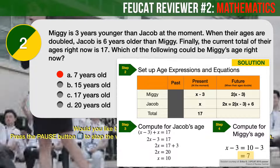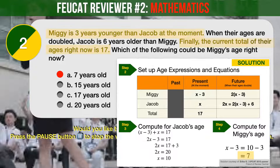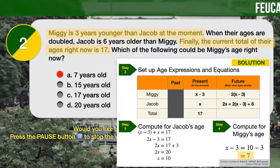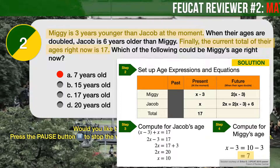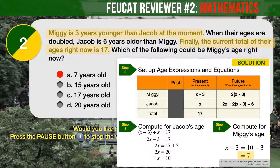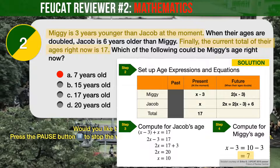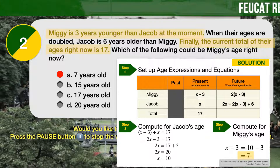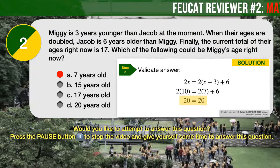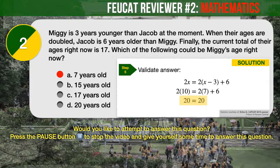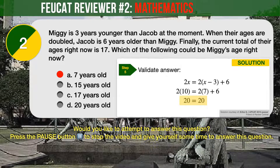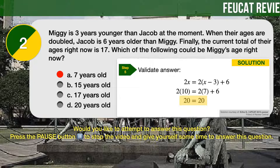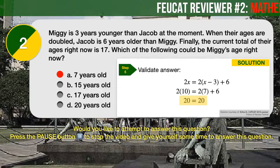Notice that we solved the problem without using all of the given information. We used the expression that Miggy is 3 years younger than Jacob, and the equation that their total ages is 17. The second sentence about doubled ages is completely unnecessary and is just meant to confuse you. Don't be immediately intimidated by problems that seem complicated. Nevertheless, substituting our computed values into that equation validates our answer. Success!